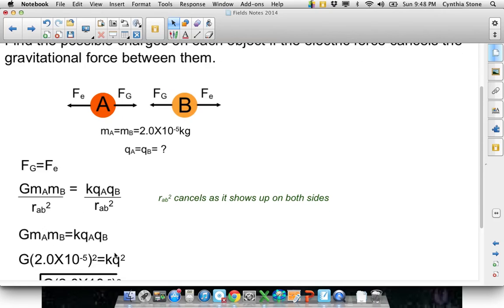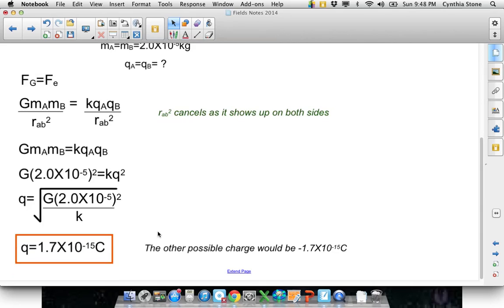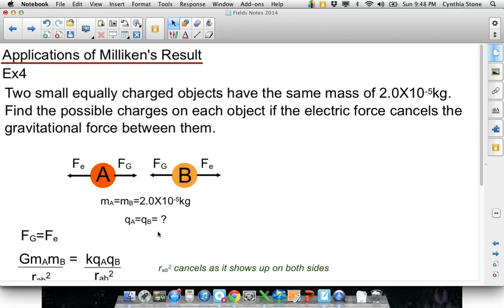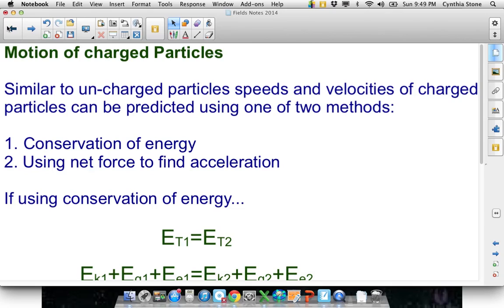You just sub in the numbers, solve for Q, 2 times 10 to the negative 15 Coulomb. So, the two possibilities, they're both positive, or they're both negative. Obviously, they're the same charge, because the two are repelling each other, right? So it's either both negative or both positive, and you can't actually tell. There's nothing in the question that lets us know if they're both positive or both negative. We just know that that's the magnitude of the charge. Okay, that's a good example. I like that one. And that's it for this lesson.